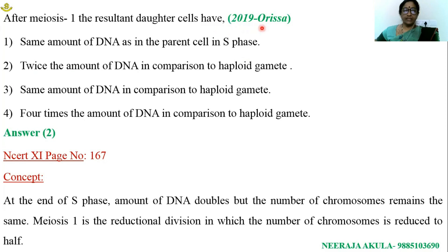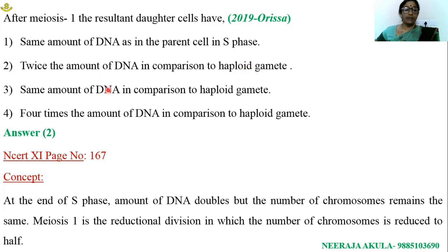This question came in 2019. After meiosis, the resultant daughter cells have the same amount of DNA as in the parent cell in S phase. How is the amount of DNA in comparison to the haploid gamete? Options include: same amount of DNA, or four times the DNA in comparison to the haploid gamete.